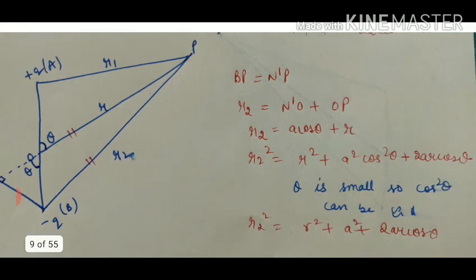Now what you have to do? Do squares on both sides. So R2 square will be R square plus A square cos square theta plus 2AR cos theta. Again theta is very very small. So cos square theta can be approximately equal to 1. So we are getting our final expression. R2 square is equal to R square plus A square plus 2AR cos theta.